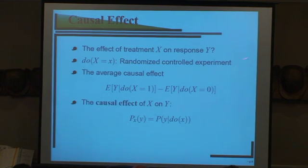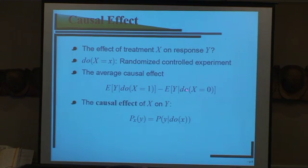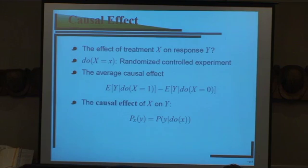The do-operation essentially models the controlled experiment. If you set X to one and observe its effect on Y, then set X to zero and observe its effect on Y, the difference corresponds to our intuition about causal effect. The causal effect is defined as the post-intervention distribution of Y after an intervention on X.